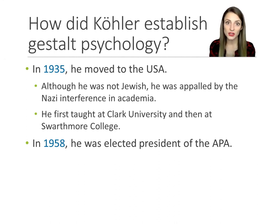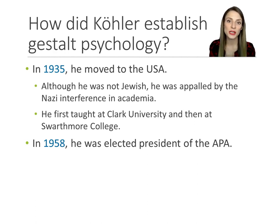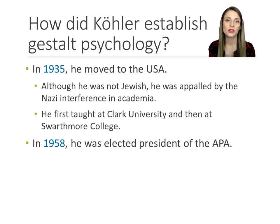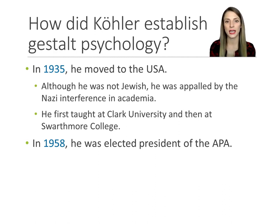He came to the United States because he was appalled by what was happening in Nazi Germany. He wasn't Jewish and did not fear for his life, but he had many Jewish colleagues, including Wertheimer and Koffka. He did not like that the Nazi regime fired his Jewish colleagues in 1933, and it was only two years after Hitler's legislation was put into place that Köhler decided to move to the United States, bringing Gestalt Psychology with him. To show just how popular Köhler became, in 1958 he was elected president of the APA.